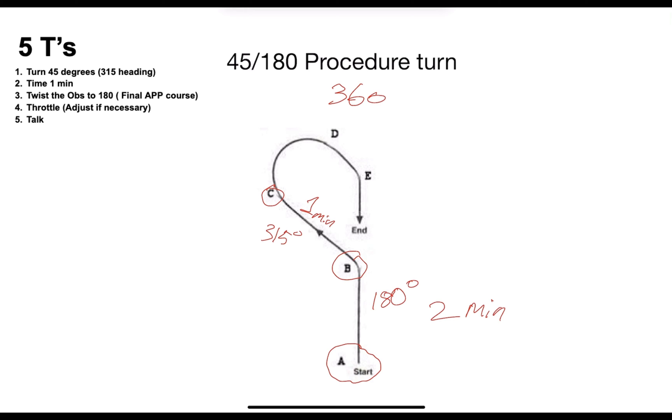Now when we reach section C after one minute, we are gonna turn to section D at a standard rate 180 degree turn. So by the time we reach section D, which should be approximately one minute, we will be flying the reciprocal heading which will be 135 degrees on this particular section right here.